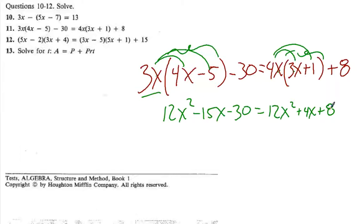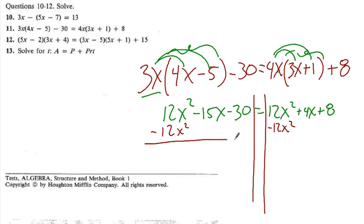So 4x times 3x is 12x squared. 3x times 1 is going to be 4x. And I still have the plus 8. Now, I realize at this point you're thinking, oh my goodness, I have x squareds and I'm asked to solve and I don't know how to do that yet. But wait. Notice how I have 12x squared on the left side and 12x squared on the right side. Which means, if I subtract 12x squared to both sides of the equal sign, they'll cancel out. And I won't have any x squareds, which is exactly what I wanted in the first place.